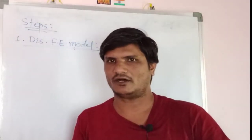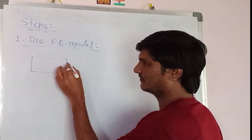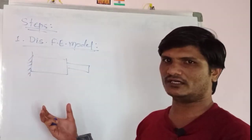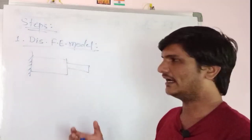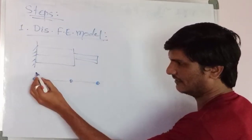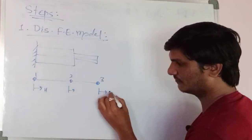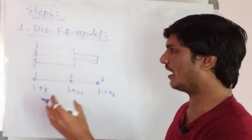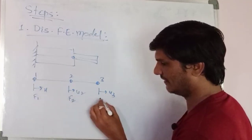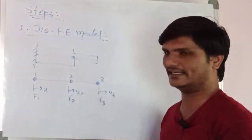In the given problem, the body or element may be given as a 3D model or solid object. Suppose it is a bar element — we have to convert that model into a line diagram. You represent nodes as 1, 2, 3, mention the deformation at each node, and also apply the forces F1, F2, F3. This step is called discretizing the given model into a line diagram.